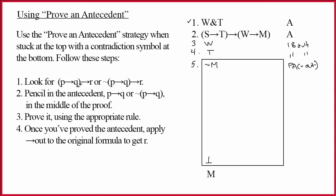First step, look for a formula of the form P arrow Q arrow R or tilde P arrow Q arrow R. Well, notice that's exactly what we have on line two. The arrow is the main connective. Check. Arrow's main connective. And then you also have an arrow in the antecedent. Yes, we have an arrow in the antecedent. So this does work.